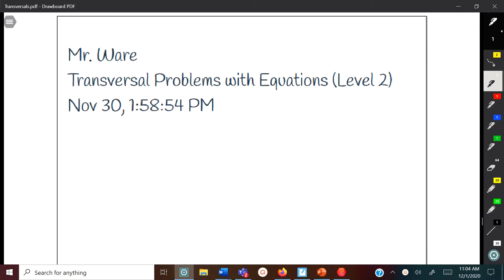In the previous lessons we talked about transversals and how they make angle pairs: alternate interior angles, alternate exterior angles, corresponding angles, same side interior, and same side exterior angles. But they also make acute angles and obtuse angles. If you got two acute angles they're going to be equal, and two obtuse angles are going to be equal. But if you got an acute and an obtuse, then they're going to add up to equal 180. That's the main premise on how we solve these equations.